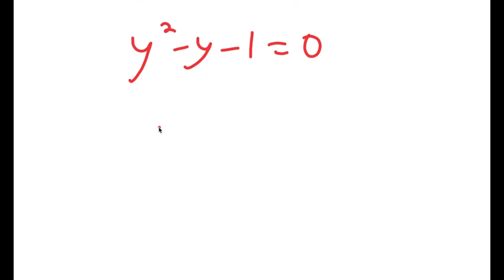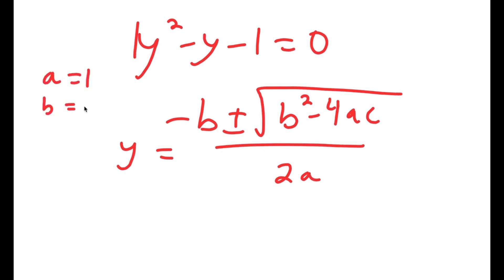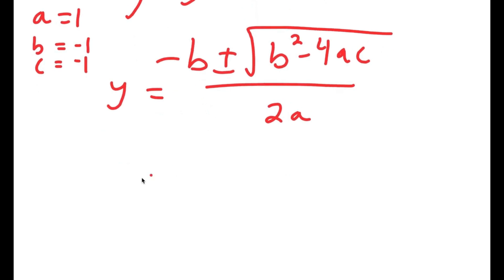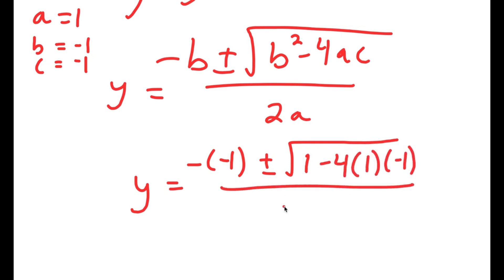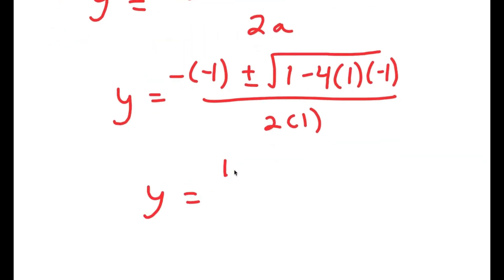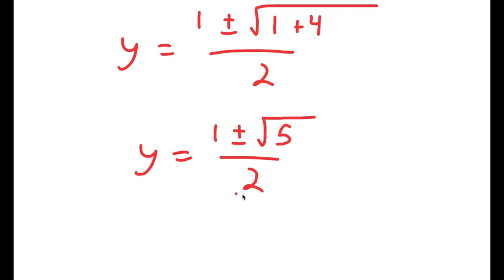Now to solve this equation, I'm going to use the quadratic formula, which is negative b plus or minus the square root of b squared minus 4ac, all over 2a. So in this case, a is 1, b is negative 1, and c is negative 1. So I get y equals negative of negative 1, plus or minus the square root of negative 1 squared minus 4 times 1 times negative 1, all over 2 times 1. This equals 1 plus or minus the square root of 5 over 2.